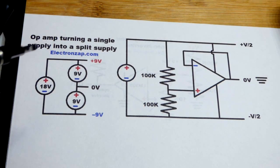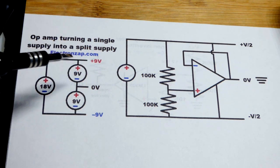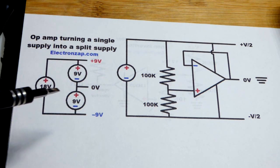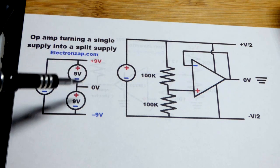Now in this video we're going to take a single supply, a single battery for instance, and turn it into a split supply. What that does is you can take two 9-volt batteries...